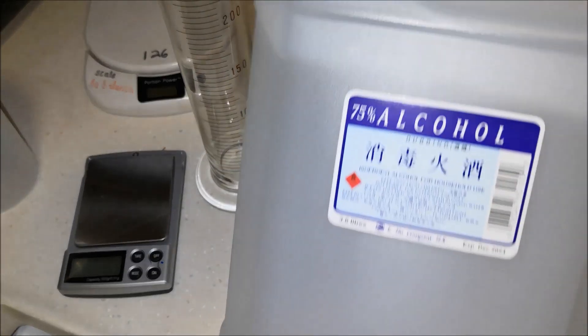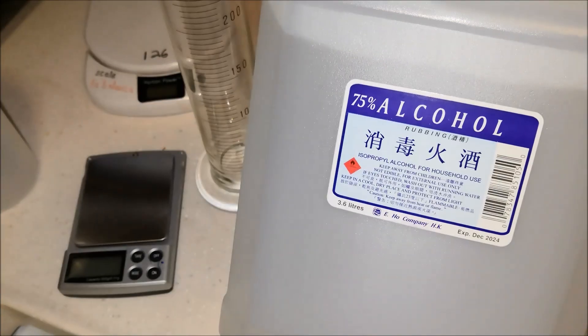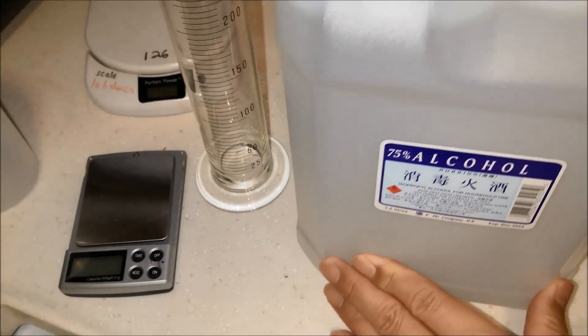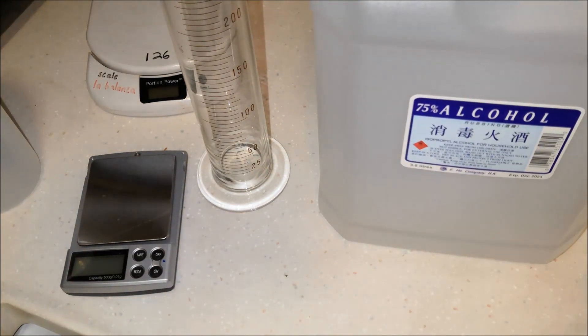Alright, so today I bought this jug of 3.6 liters of 75% isopropyl alcohol, and what I'm going to do is do some science here to find out if it's really 75% alcohol.